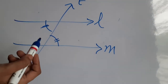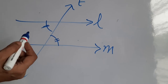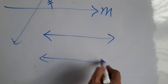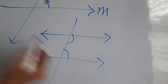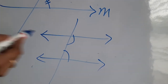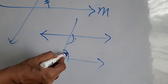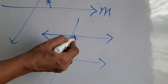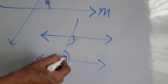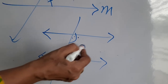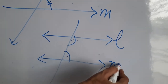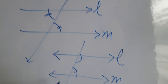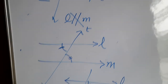The third condition to check: the pair of co-interior angles must be supplementary. If the angles are given to you and their sum is 180 degrees, it means the two lines are parallel. So these three conditions are used to check whether lines are parallel or not.